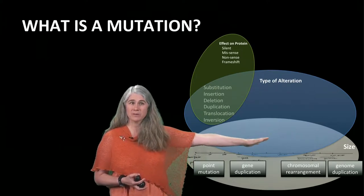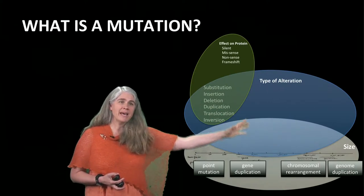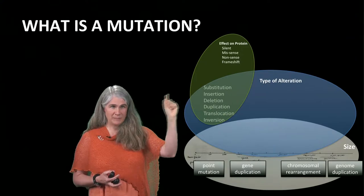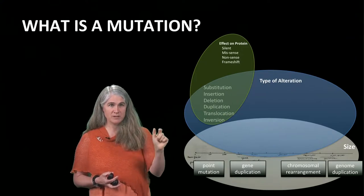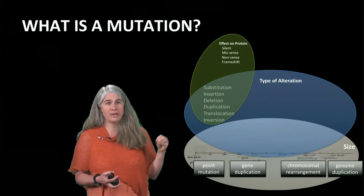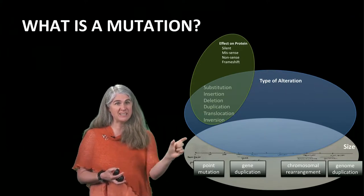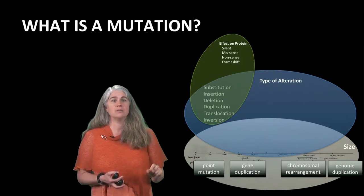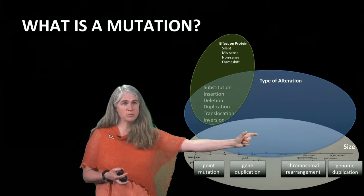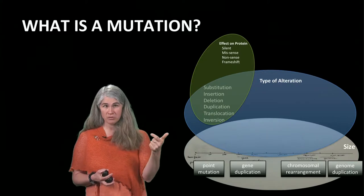Mutations also can happen by different mechanisms. You can substitute bases for one another. You can insert new ones, adding them. You can delete them, take them away. You can duplicate segments of DNA, repeating them one after another. You can translocate, where you pick a piece up and move it somewhere else. Or you can invert a section of DNA, turning it backwards.